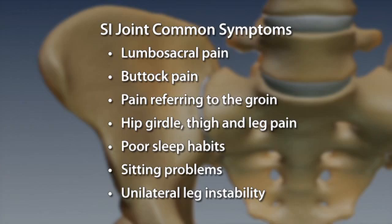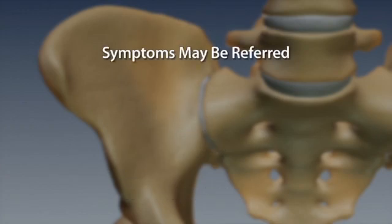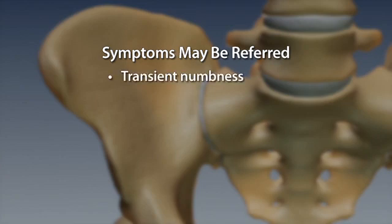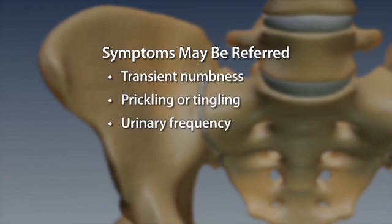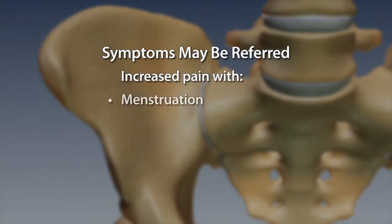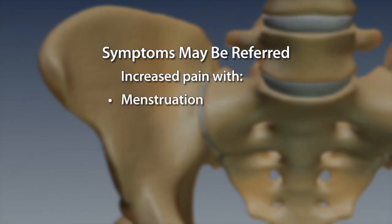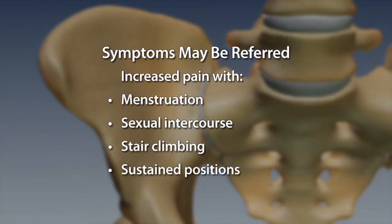A symptomatic SI joint can refer symptoms distally in a somatic distribution such as transient numbness, prickling or tingling, urinary frequency, iliac crest pain, increased pain with menstruation, sexual intercourse, stair climbing, or with sustained positions.